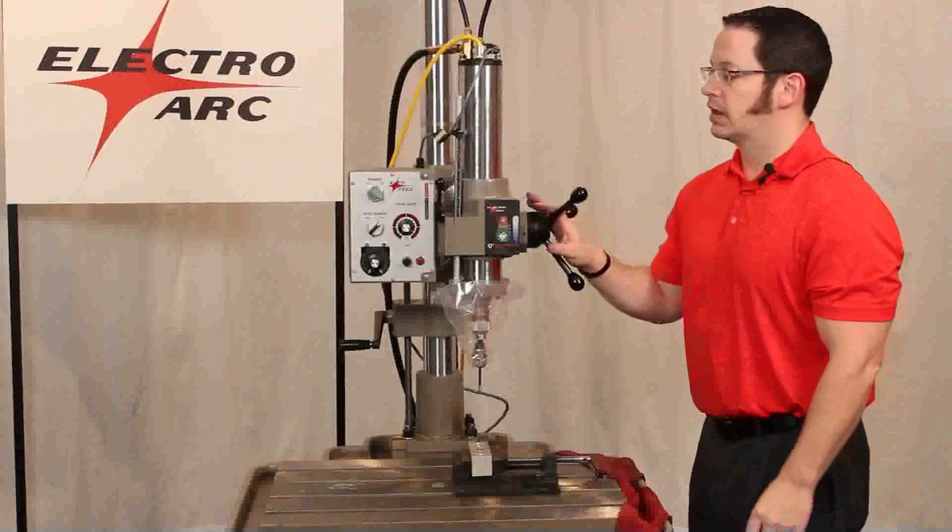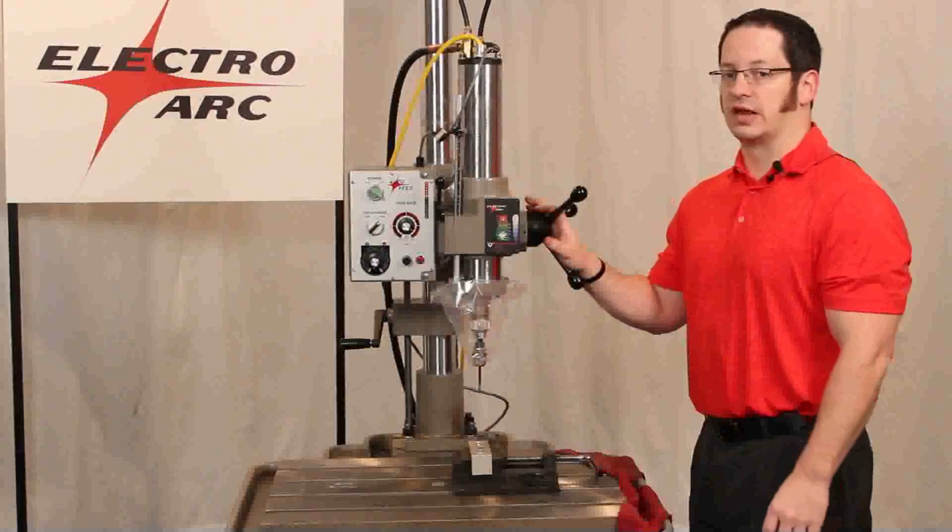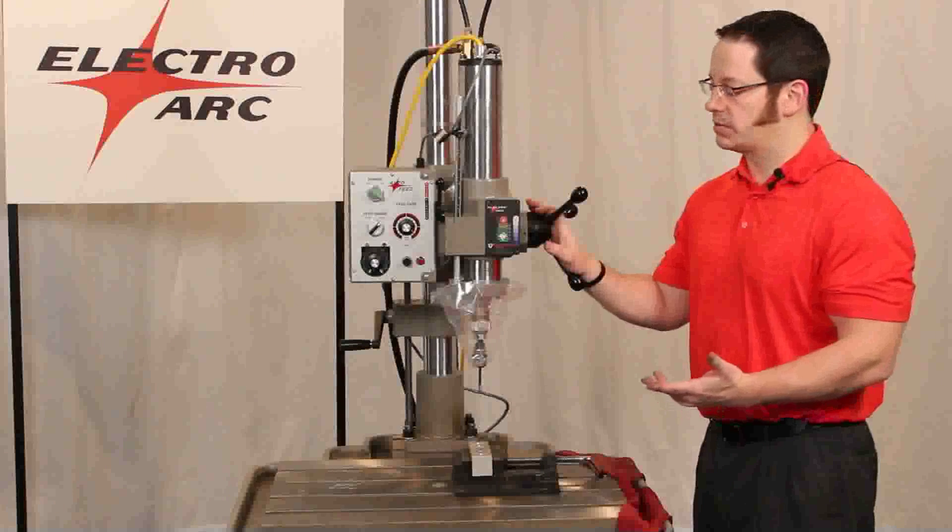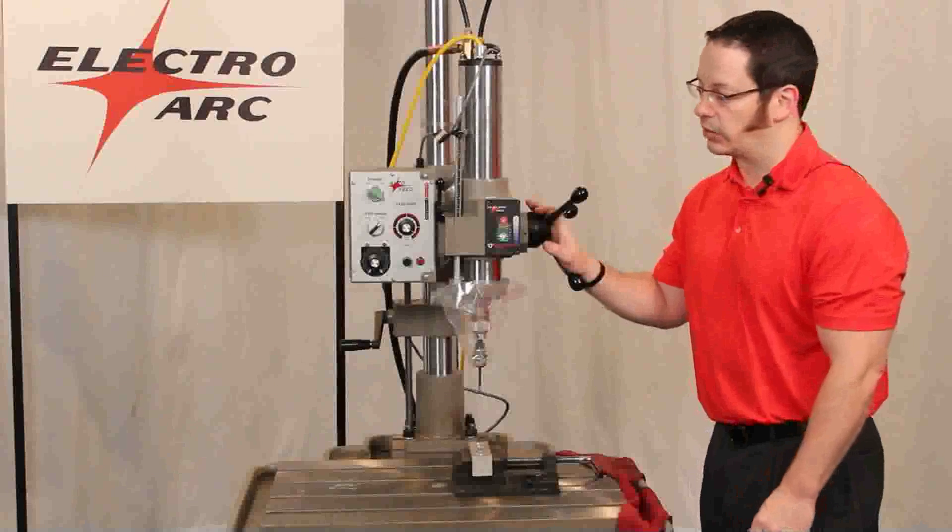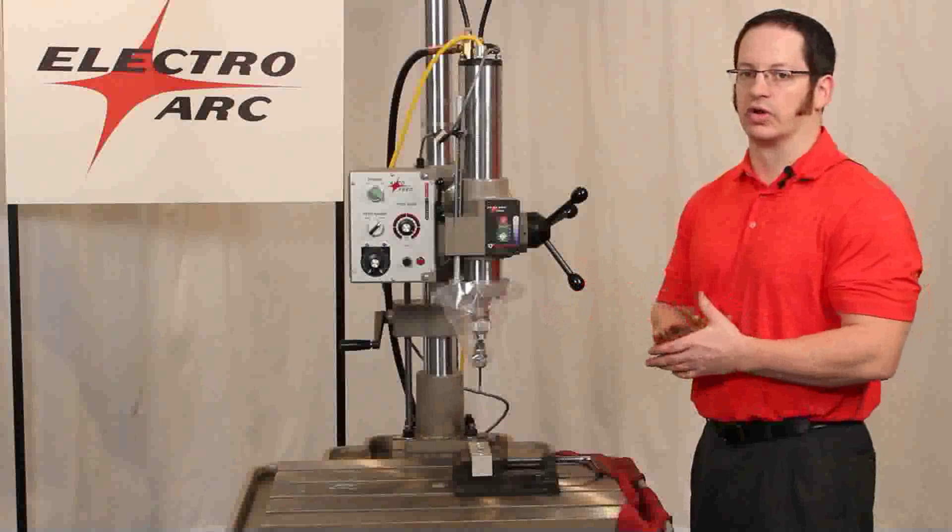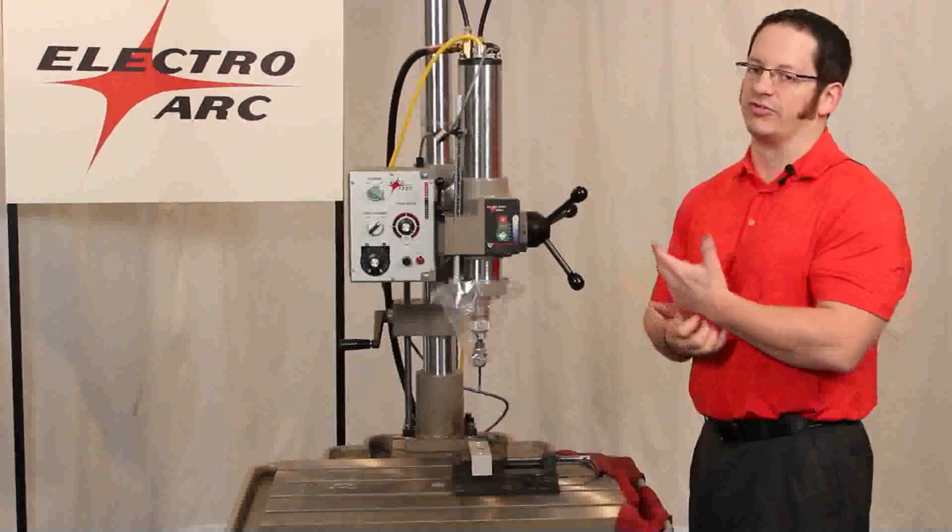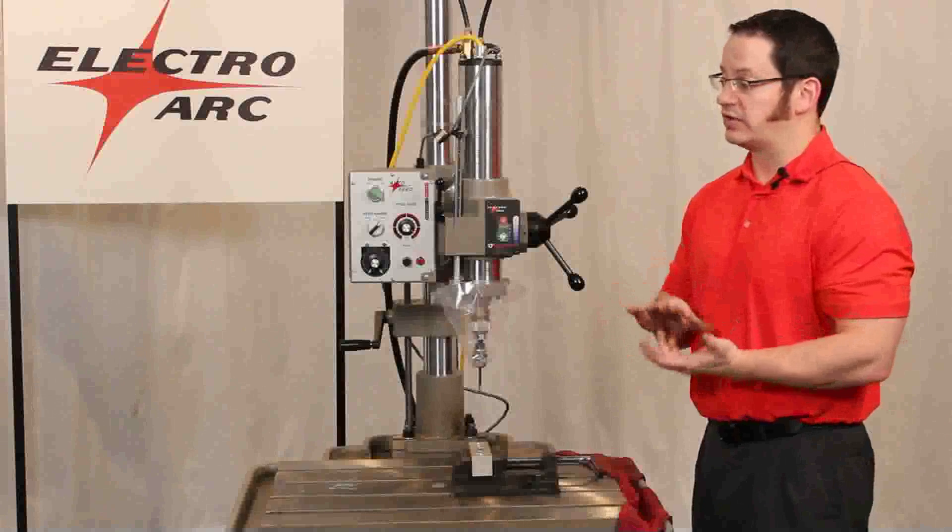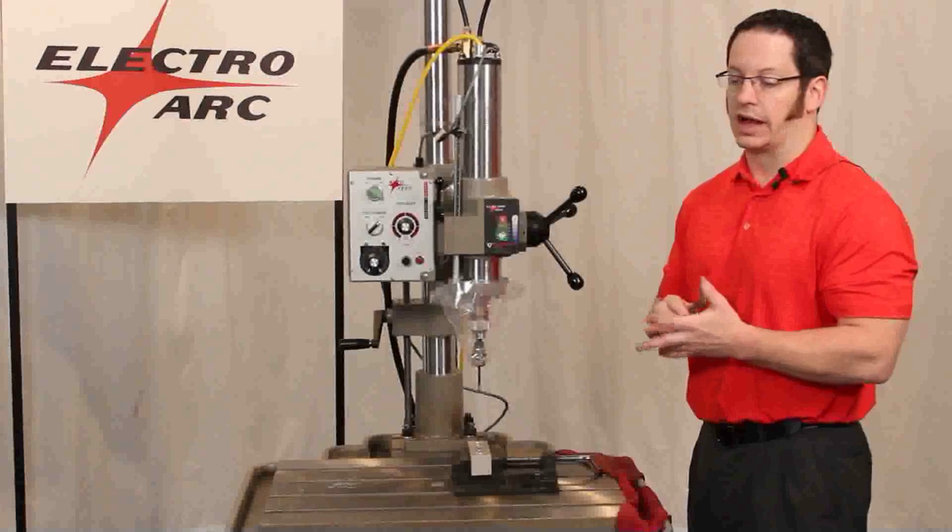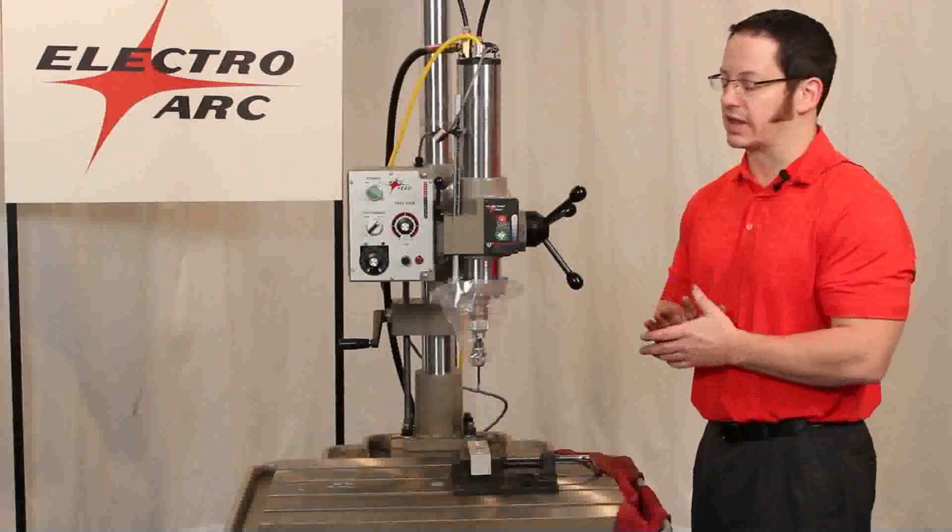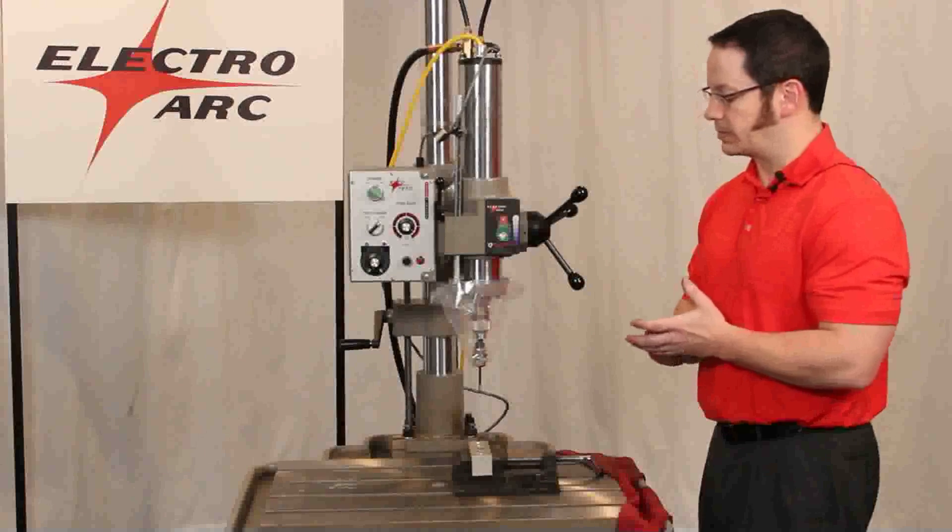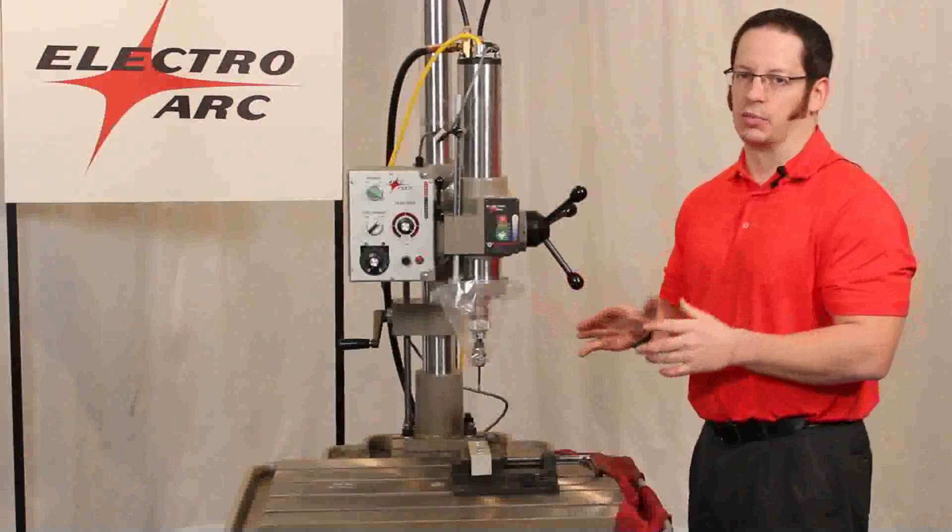This is an AC powered machine. We also make machines that use a DC output for the power supplies. The only difference is based on how much carbide tooling you might be taking out. If you have an abundance of carbide, we might guide you toward a DC machine, as they are just a little bit more efficient on carbide tooling. However, AC or DC are able to remove any types of tooling like carbides, high-speed steels, inconels, and materials like that. Either power supply can do pretty much any material, just one is slightly more efficient on carbide tooling.